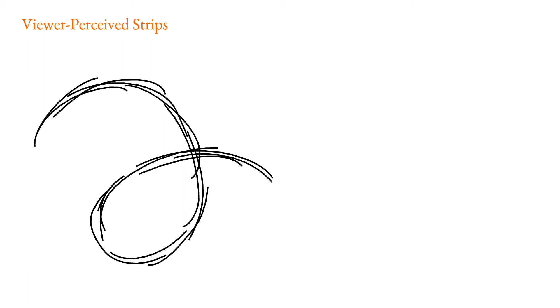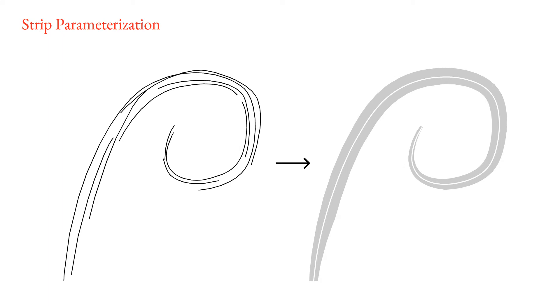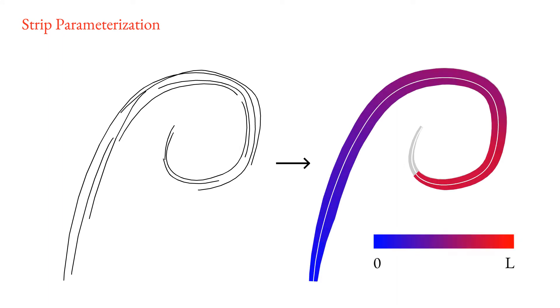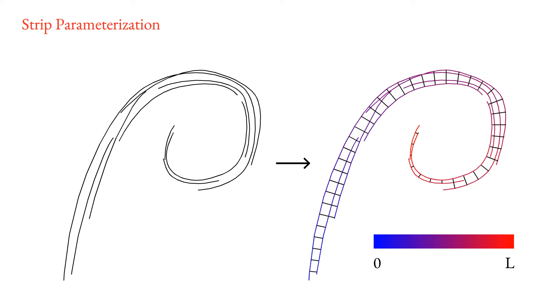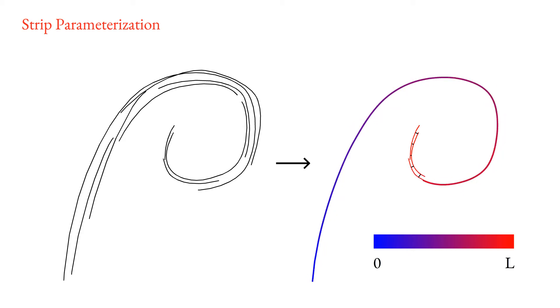Our method is based on the observation that viewers see each stroke cluster as a continuous, varying-width strip whose path follows the intended curve. Each such strip can be parameterized using an arc-length 1D parameterization whose iso-lines are orthogonal to the intended curve. The restriction of this parameterization to the cluster strokes provides a natural mapping from the strokes to the a priori unknown intended curve.